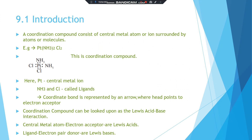The species surrounding the central metal atom or ion are called ligands. Here, NH3 and Cl⁻ are called ligands and the central metal atom is platinum. The ligands are linked directly to the central metal ion through a coordinate bond, which is formed when the shared electron pair is contributed by the ligand.